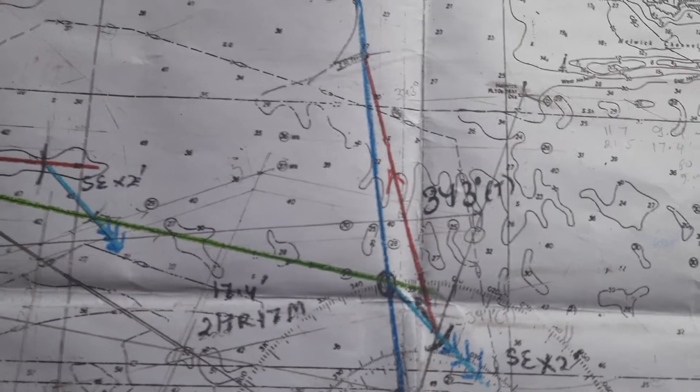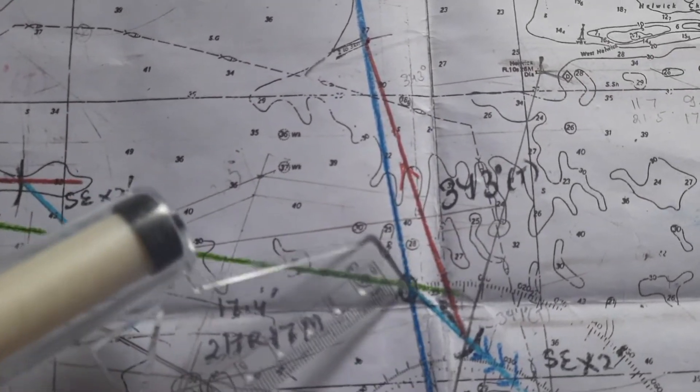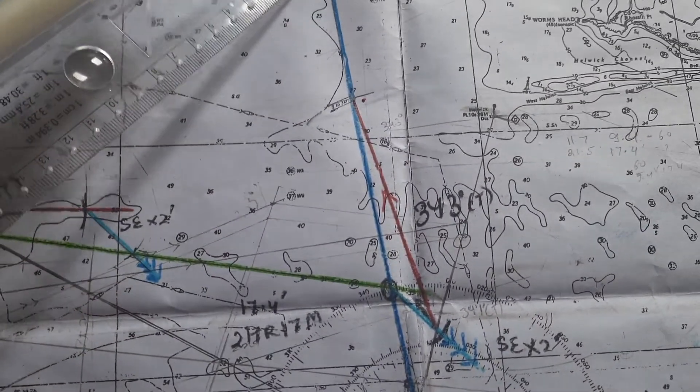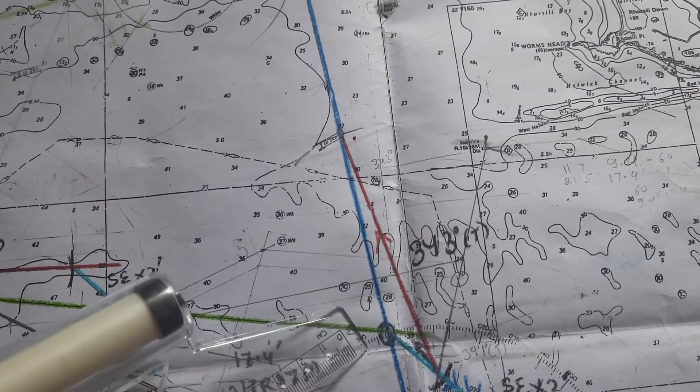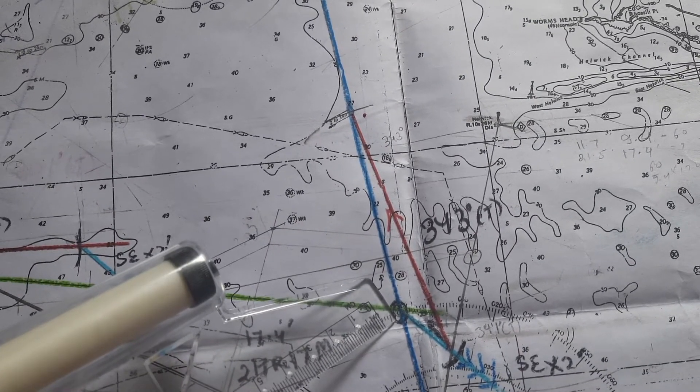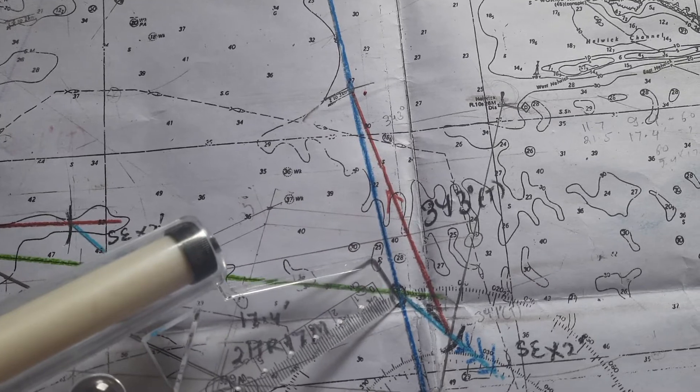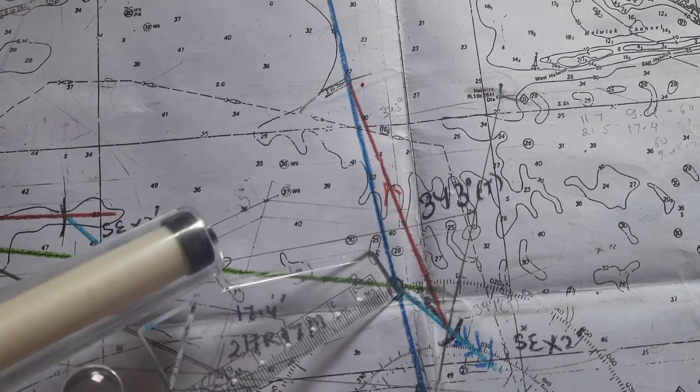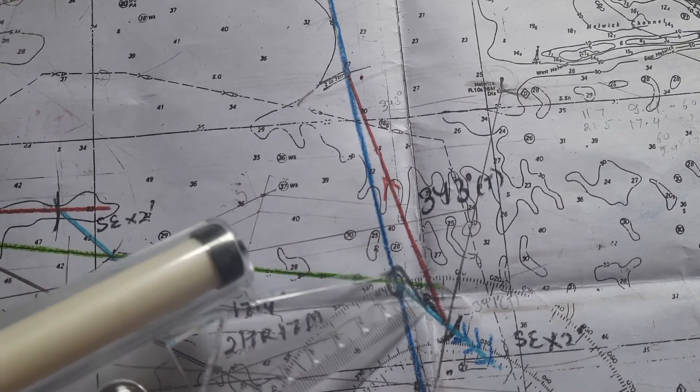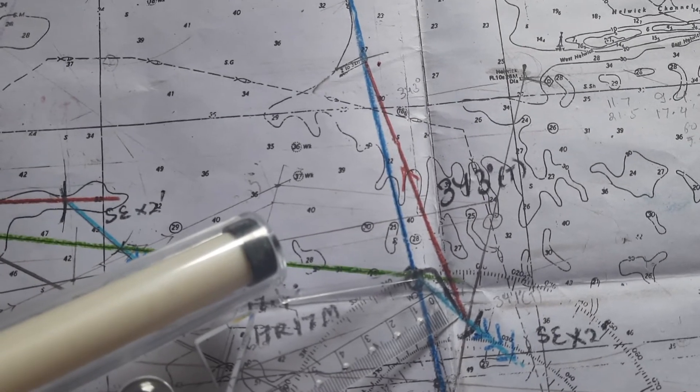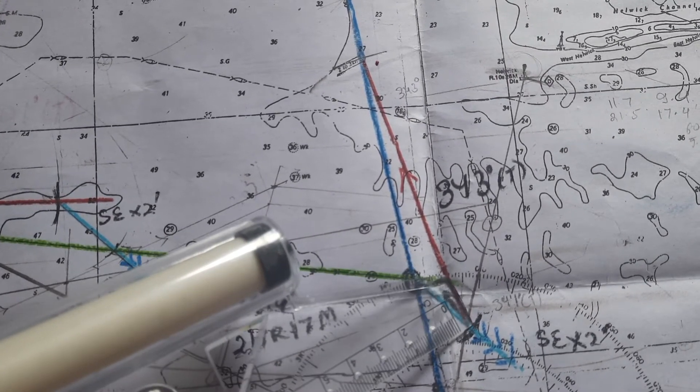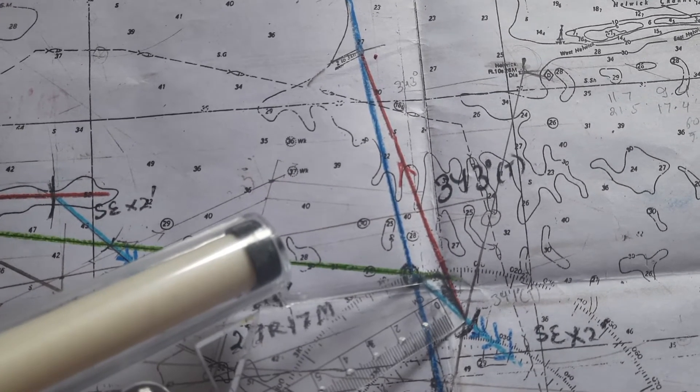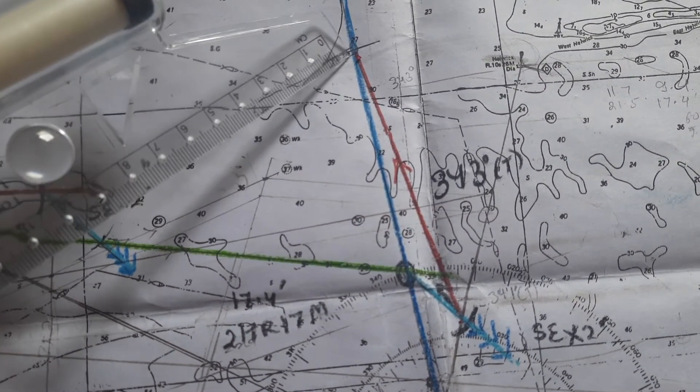Now from this point of alteration we have to pass on this course, so this is our course made good. Because we have course made good, we will use counteracting method. So we apply current initially first, we apply southeast into two knots, and then wherever it cuts two knots we take an arc of eight miles and we put an arc of eight miles.